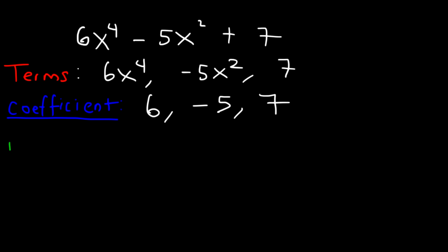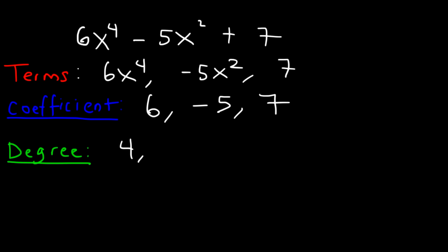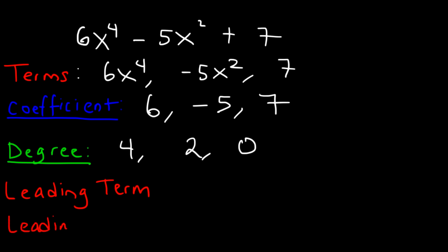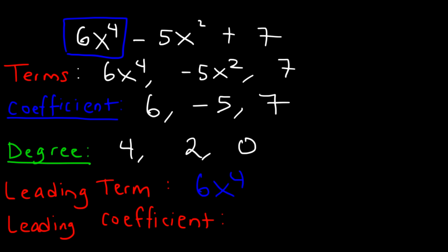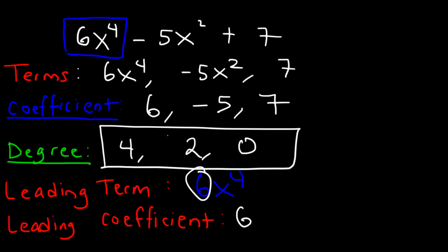The degree of each term is basically the exponent you see. The degree of the first term is 4, the second term is 2, and a constant has degree 0. The leading term is the term with the highest degree — it's 6x to the fourth. The leading coefficient is simply the coefficient of the leading term, which is 6. The degree of the entire polynomial is the highest degree, so it's degree 4.